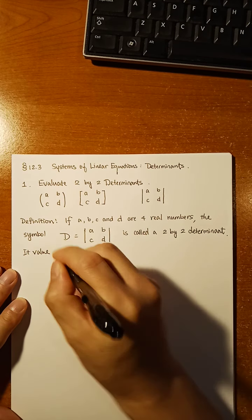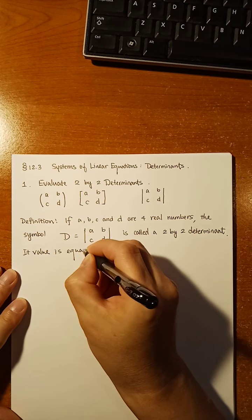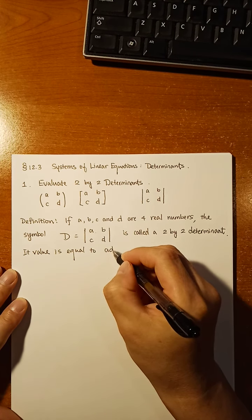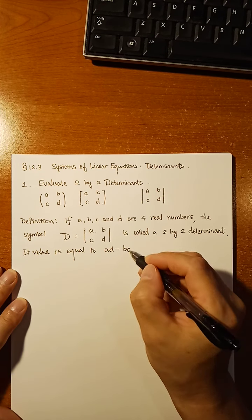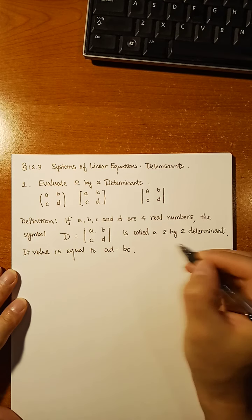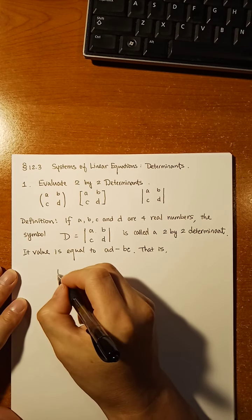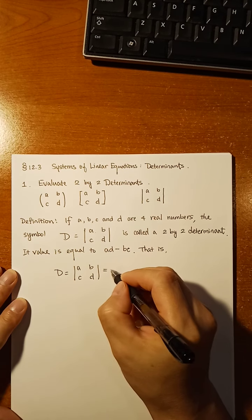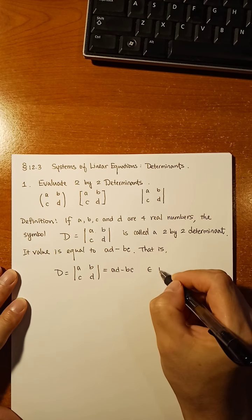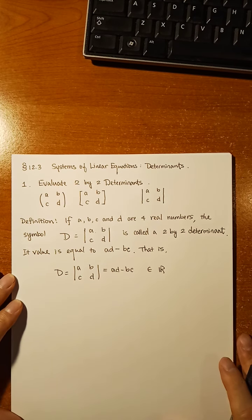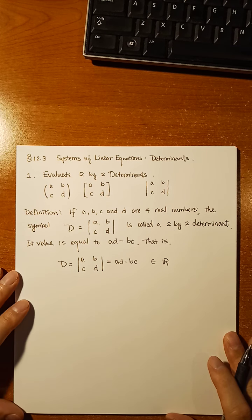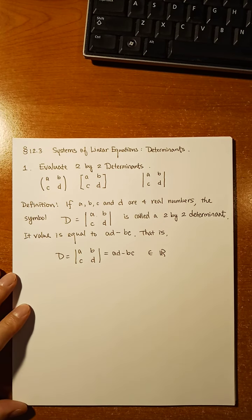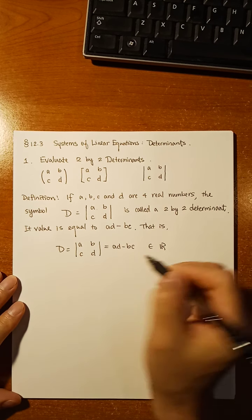The 2-by-2 determinant is a number. Its value is equal to AD minus BC — we use cross multiplication: A times D, B times C, and then subtraction. This determinant with two vertical bars equals AD minus BC. It's a real number. This is called a diagonal; the other is the other diagonal — it's the difference of the products of the diagonals.